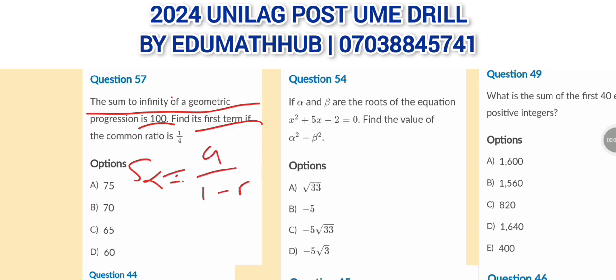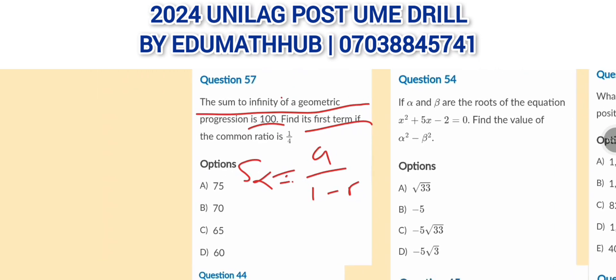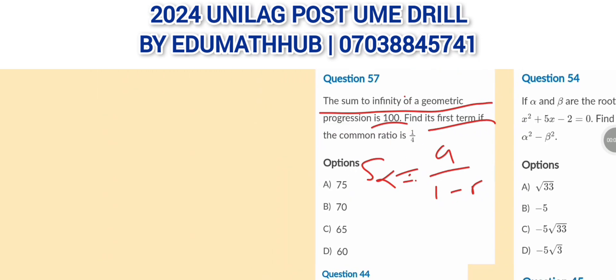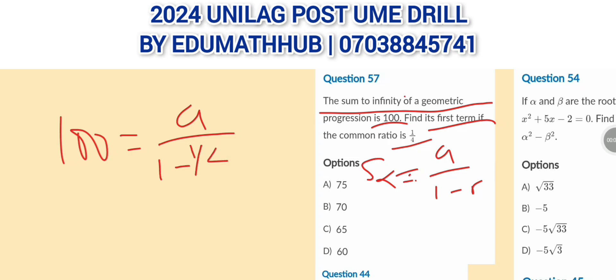That's the formula, so let's plug into it. We're looking for the first term. The sum to infinity is 100, so we write: 100 = A divided by 1 minus the common ratio. The common ratio in the question is 1 over 4, so we write 1 over 4 here.